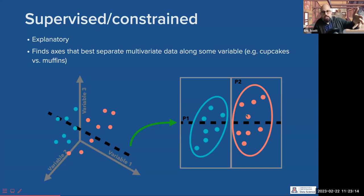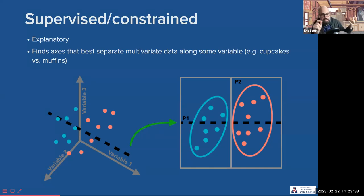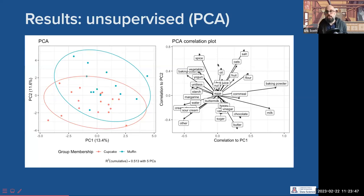This is a three-dimensional example, which is about as big as your brain can visualize. But if we scale that up to — in the case of our cupcake and muffin data set — 30 variables, we have a 30-dimensional data set. Every recipe exists in 30-dimensional space, and we want to simplify that down so we can project our points onto, say, the first two axes. I'm going to show you the results right now, then we'll go back and look at the R code.